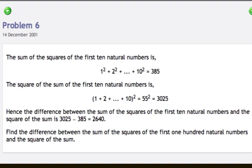I'll read problem 6 to you. The sum of the squares of the first 10 natural numbers is 1² + 2² + 3² and so on until 10² equals 385. The square of the sum of the first 10 natural numbers is 1 + 2 + 3 and so on until 10, all summed up and squared, and that is 3025.